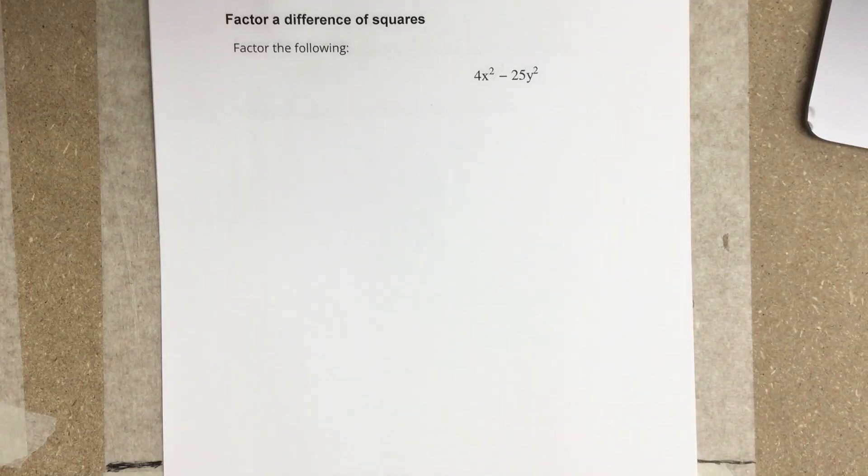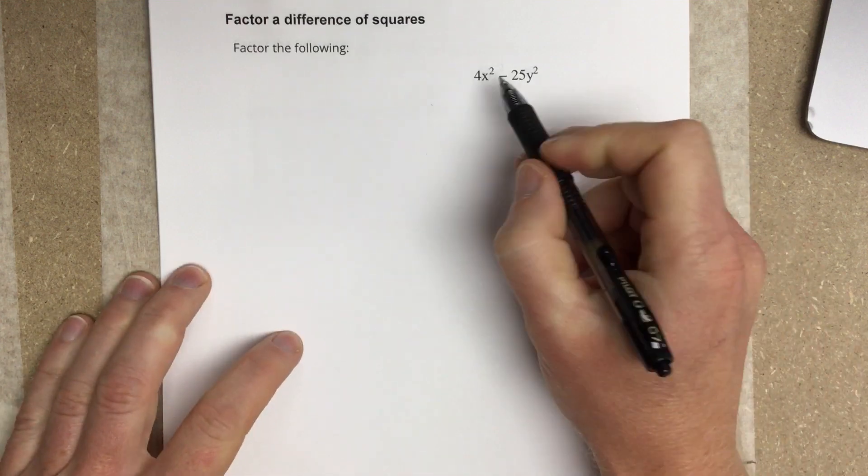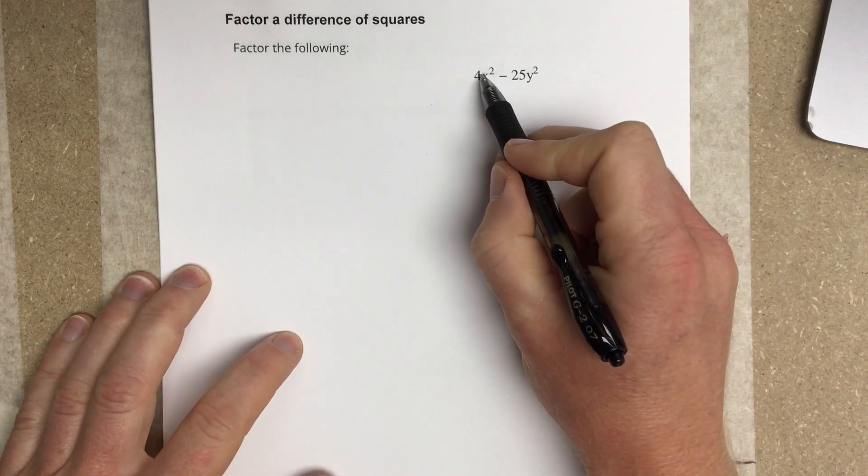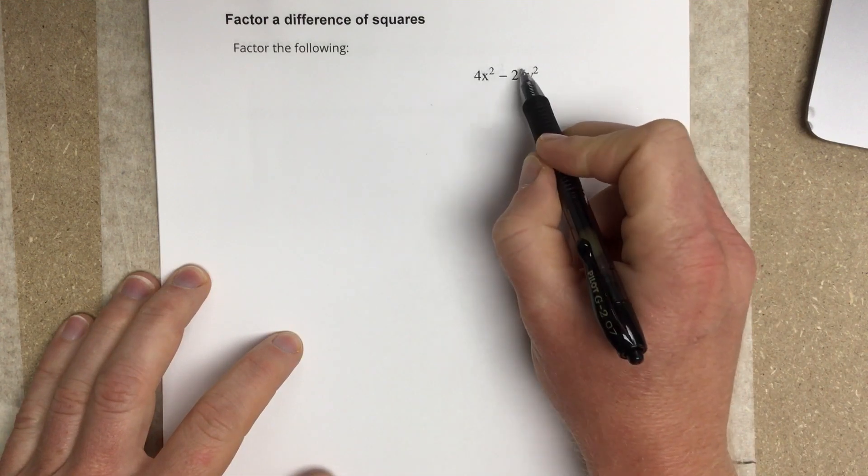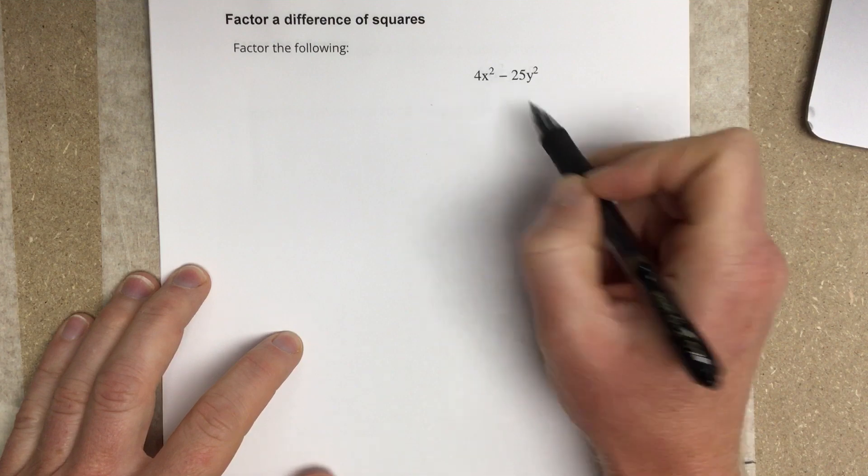In this video, we're going to factor a difference of squares. You can notice that you have a difference of squares when you have a square in the front term and a square in the back term, and there's no middle term.